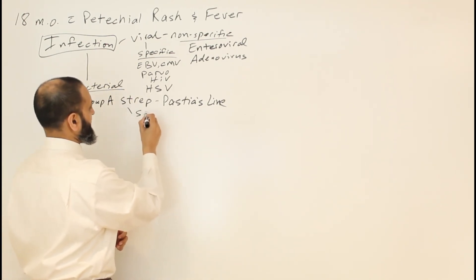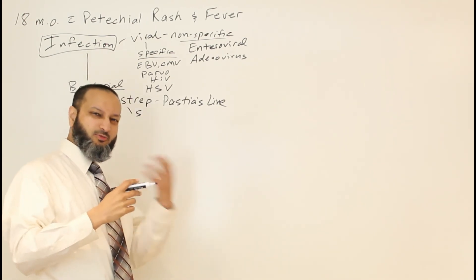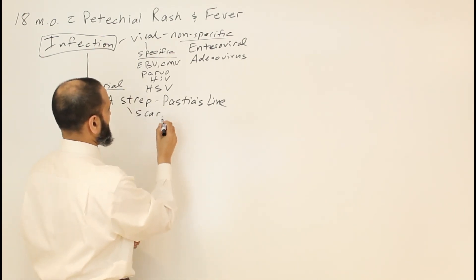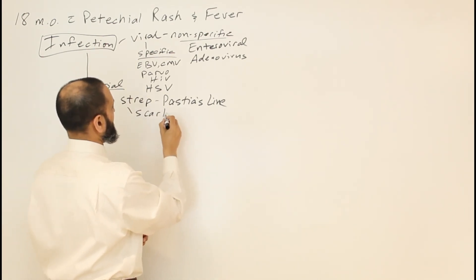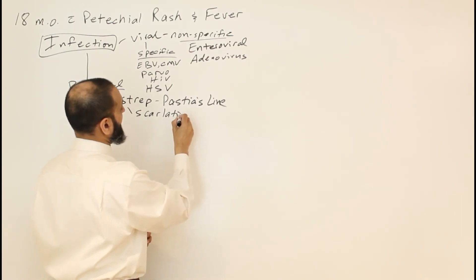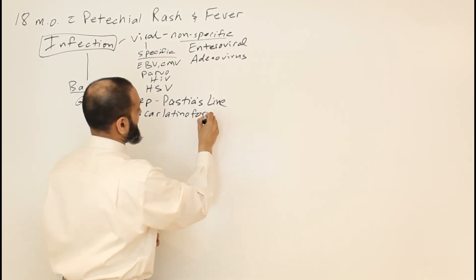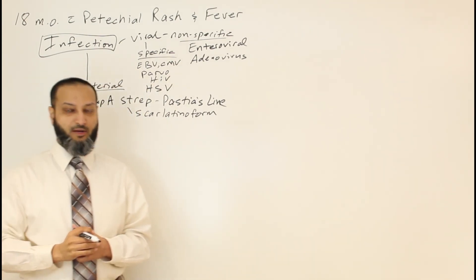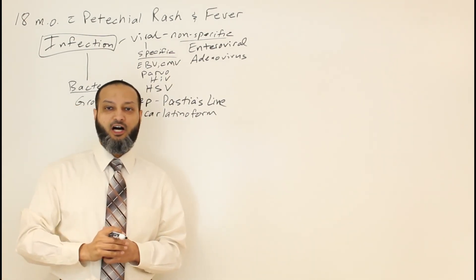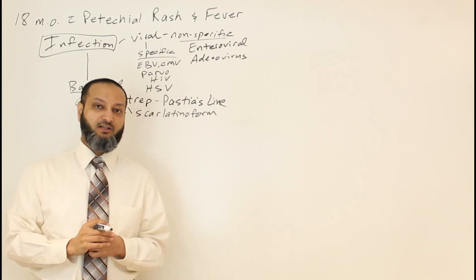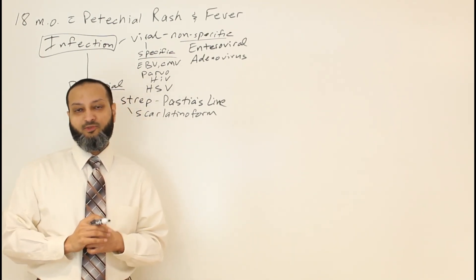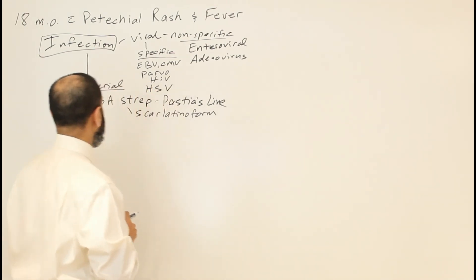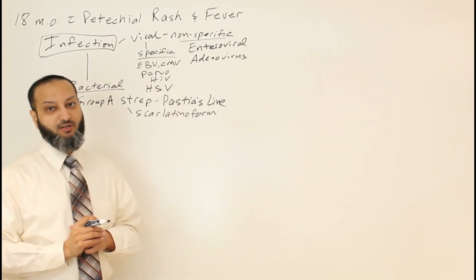Occasionally, a scarlatiniform type of rash might look petechial, but it's usually more maculopapular. Still, the scarlet fever rash of group A strep can occasionally be petechial — most commonly in the antecubital fossa, where it would be called Pastia's lines. Group A strep is common but usually not severe. The other bacterial infections to think about are ones that cause really bad infections and sepsis.